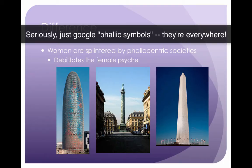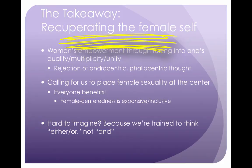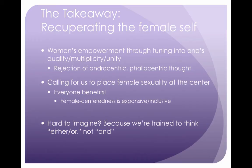So this leads to the positive part of Irigaray's paper. The point of all of this is trying to recuperate the female self. We do this by tuning into one's duality, multiplicity, or unity — and this is where power comes for women. This comes by a rejection of the androcentric, phallocentric ways of thinking. Irigaray is calling for us to stop thinking within phallocentric parameters and place female sexuality at the center. And this isn't as negative as you might think — everyone benefits because putting women at the center is an expansion, inclusive of male eroticism. It doesn't have to be one or the other. Irigaray wants us to stop thinking of either/or and start thinking of 'and.'